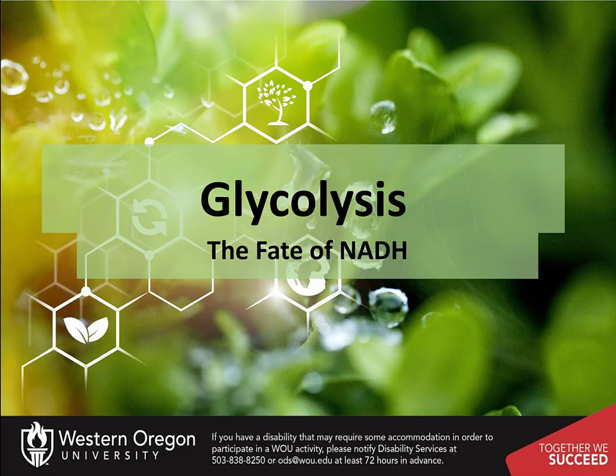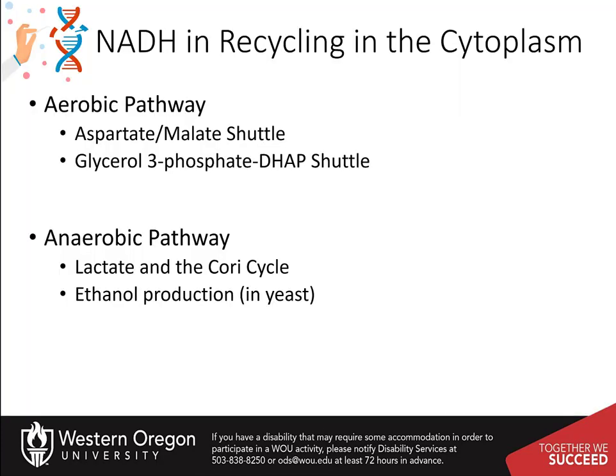We now turn to the glycolytic process to explore the fate of NADH that is produced during the metabolic pathway. The glycolytic pathway yields a total of 2 ATP and 2 NADH molecules per glucose processed. NADH can be utilized in the electron transport chain in the mitochondria to help generate the proton gradient required for the oxidative phosphorylation of ATP production.